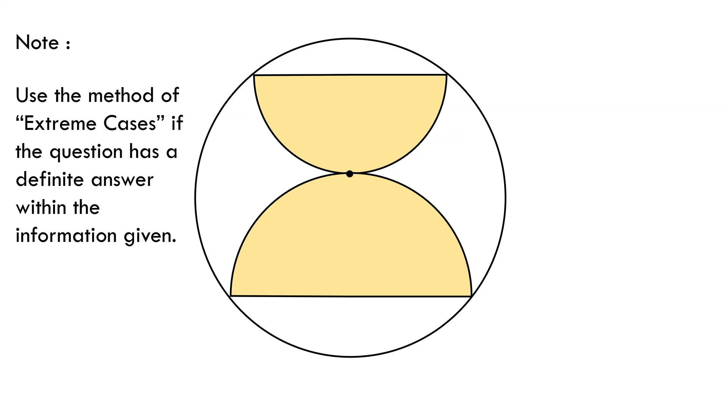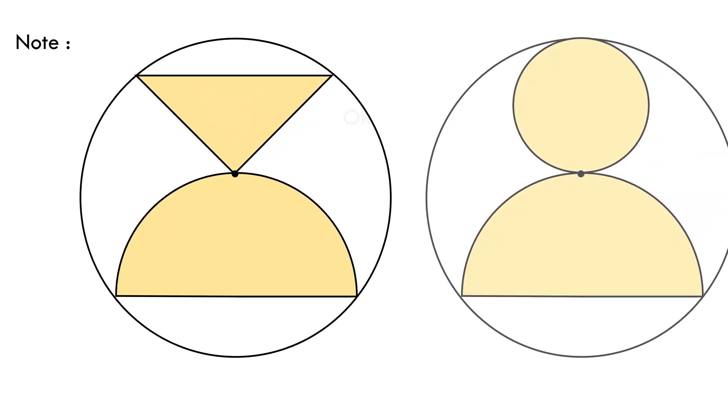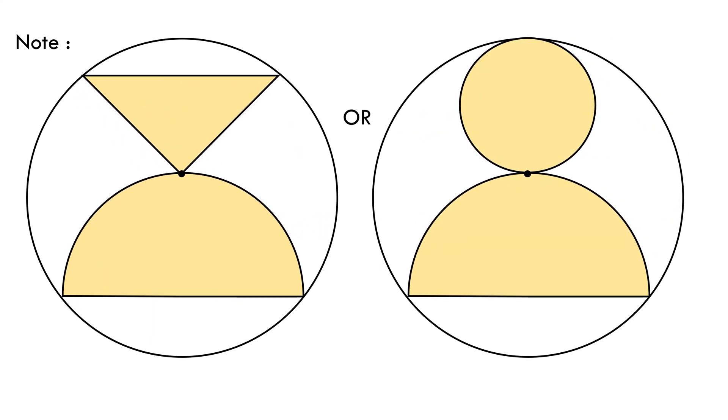For instance, would we use this concept if any of the semicircles was a triangle or a circle so as to speak? We could not, because in that case, there would not be a definite answer to the question, as the information provided in the video would be insufficient.